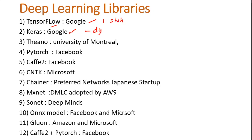Keras is another Google library that overcomes TensorFlow's problems and uses dynamic graphs. Theano is a very old library developed by the University of Montreal, but they have stopped developing it further. PyTorch was developed by Facebook using the Torch framework. Caffe2 was also developed by Facebook. CNTK was developed by Microsoft for NLP. Chainer was developed by Preferred Networks, a Japanese startup. MXNet was developed by DMLC and is now maintained by Apache, adopted by AWS and Azure.